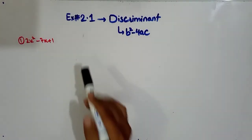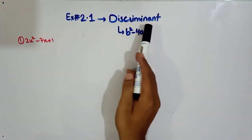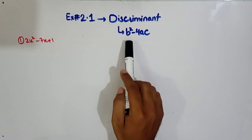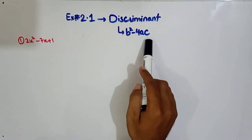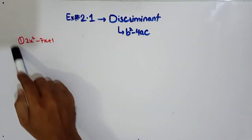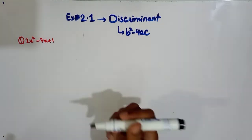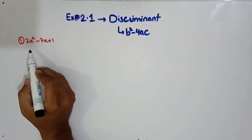Hello and Assalamualaikum everyone, I hope you guys are doing great. Today we will learn how to discriminate. Now discriminant is b squared minus 4ac. I have written a question, so how to discriminate, that we will solve.